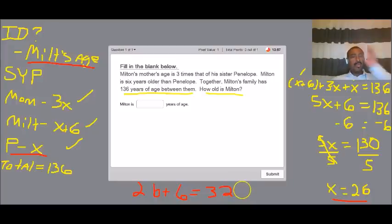So again, step one is to identify the question, which we want to know how old is Milton. And then the next step is to state your path. So we know that Milton's mother is three times that of his sister. So we said that's 3X.